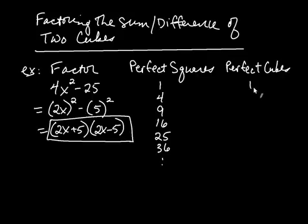What are some perfect cubes? Well, 1 cubed is 1, 2 cubed is 8, 3 cubed is 27, 4 cubed is 64, 5 cubed is 125. Now you're not expected to know any cubes larger than that. So these are the only ones that most of the time you'll be asked to know, but you will want to know them.